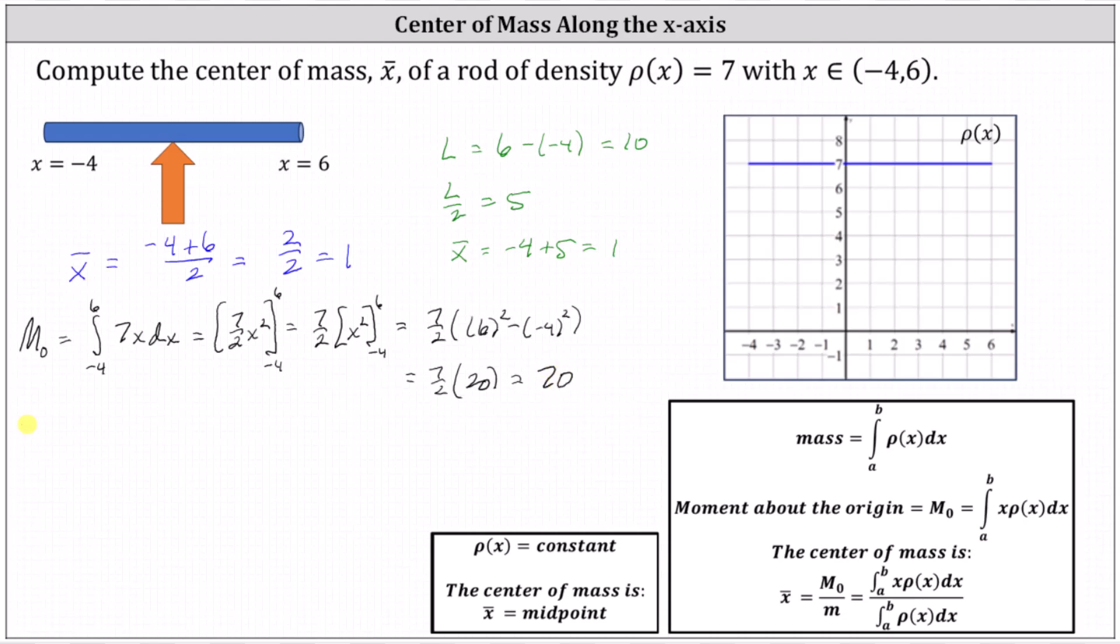And now to determine the mass, the mass equals the integral from negative four to six of 7dx. The antiderivative is 7x. Let's factor out the seven.